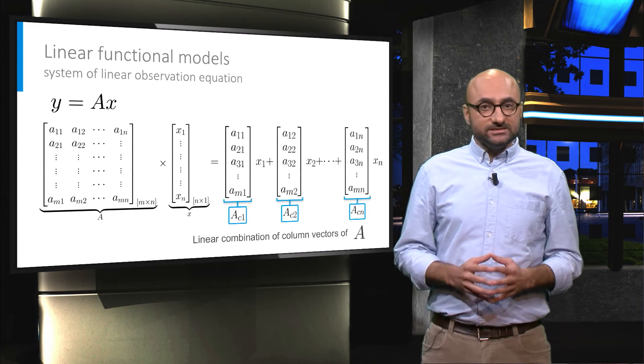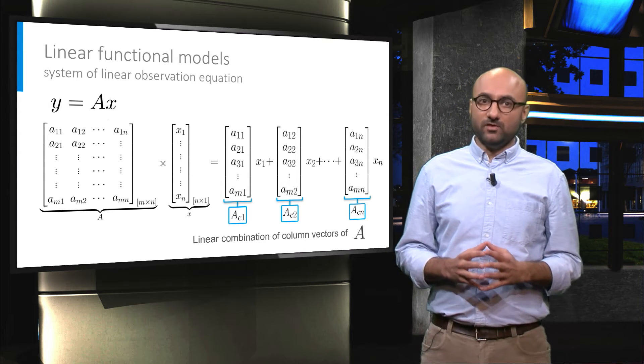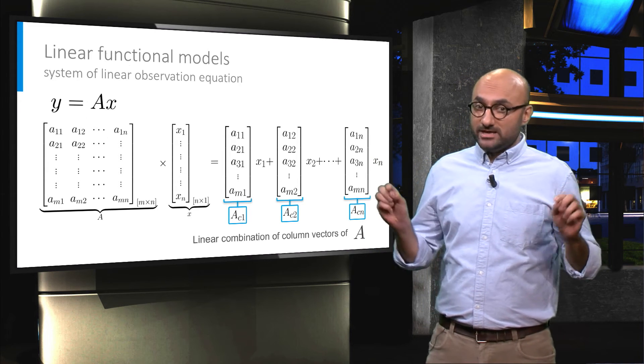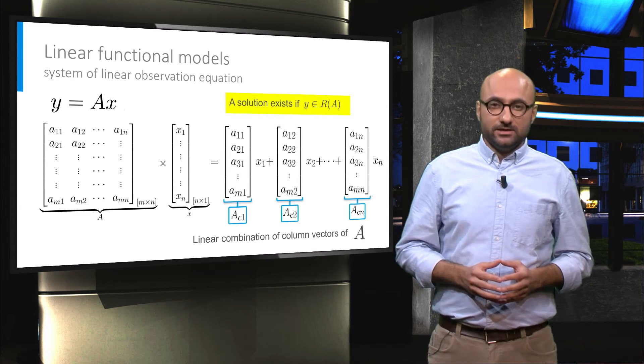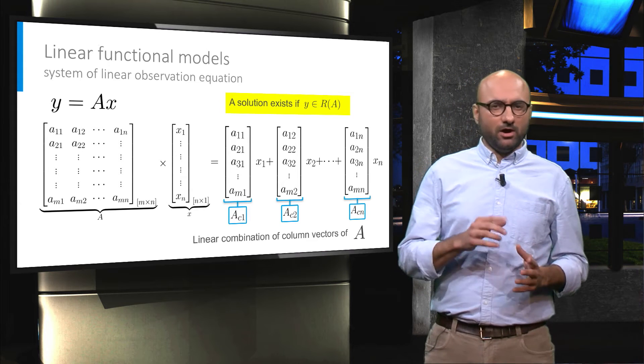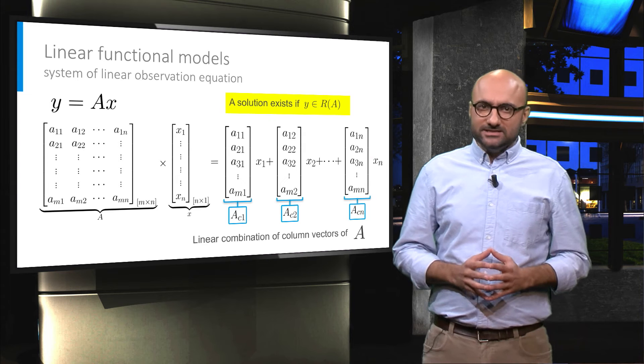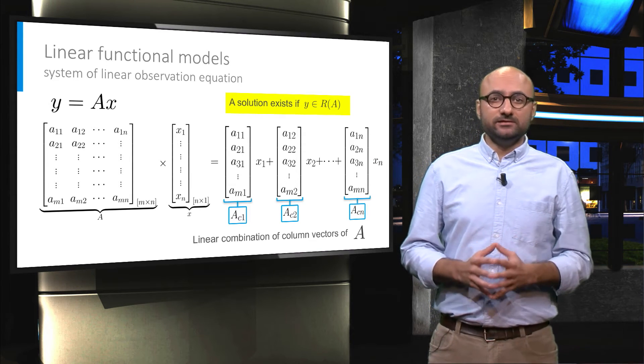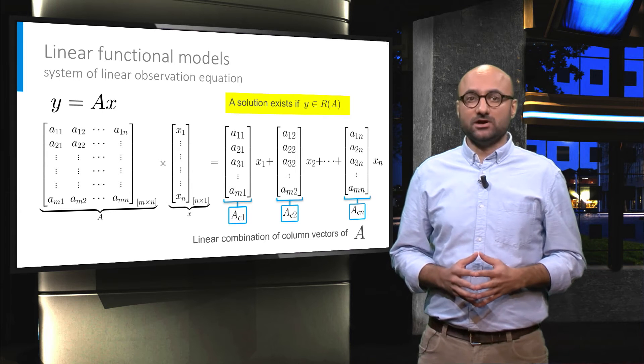If this is the case, the vector y is an element of the column space or range space of matrix A. Recall that the range space of matrix A, denoted by R(A), is the space in which all vectors can be constructed as a linear combination of the columns of A.